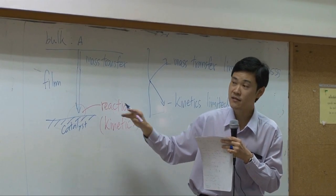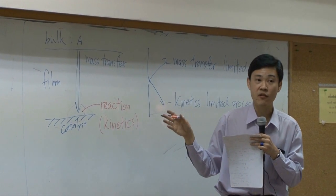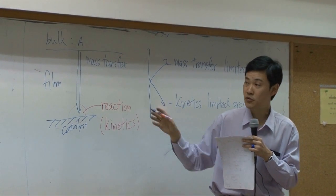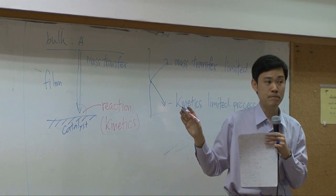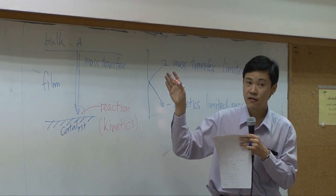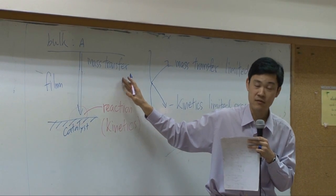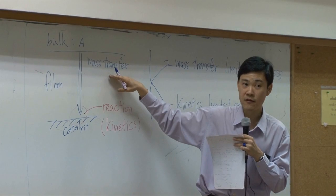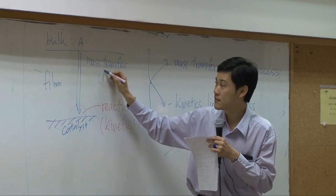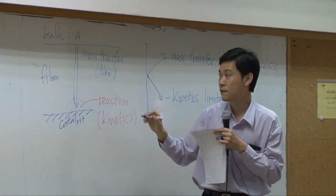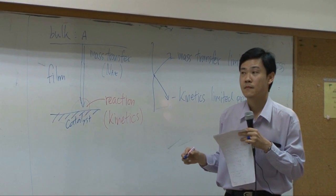That means the overall rate of production of B or rate of consumption of A would equal to rate of mass transfer of A. So, if you say that overall rate depends on rate limiting steps. In this case, mass transfer is rate limiting steps. Therefore, overall rate is determined or equal to flux of mass transfer.